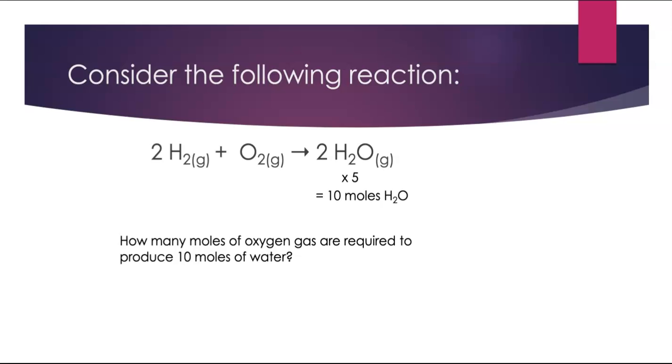So to get 10 moles of water, I need to multiply by 5. That means I need to multiply the O2 by 5. I would need 5 moles of O2 to make 10 moles of water. So we can use this for proportional reasoning. And this proportional reasoning becomes the basis of the entire stoichiometry unit. We don't always write it out in this format. We do a lot with dimensional analysis. But this is the kind of thinking and problem solving that we need to do in this unit.